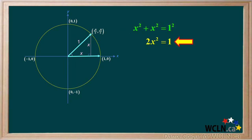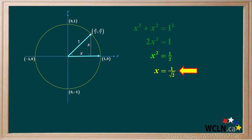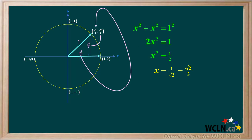Pythagoras tells us that x squared plus x squared equals 1 squared. Therefore, 2x squared equals 1, so x squared equals 1 half and x equals 1 over the square root of 2. Rationalizing the denominator gives us x equals root 2 over 2. So both legs of this triangle have a length of root 2 over 2, which means the x and y coordinates of this point are both equal to positive root 2 over 2. In other quadrants, these can be positive or negative depending on which quadrant.